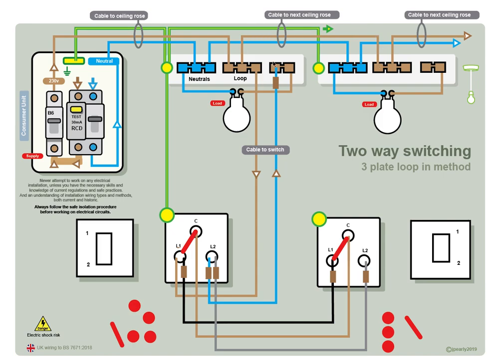We also have the neutral connection: neutral from the consumer unit, the neutral bar, neutral goes on to the next ceiling rose, and the neutral always goes down to the lamp. We need a neutral for the lamp to work.